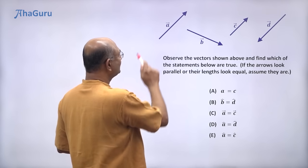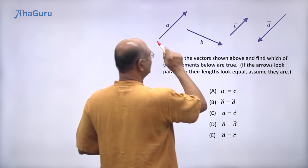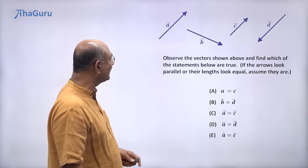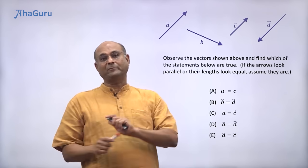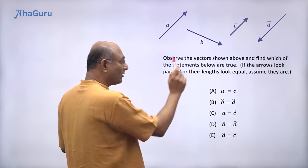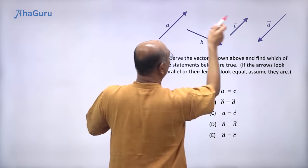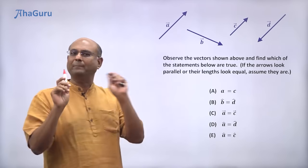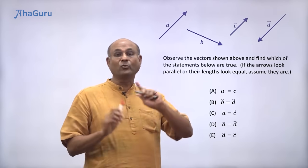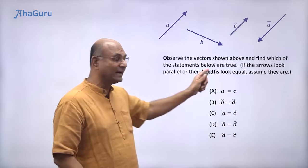Let us now look at this question. In this question, we have been given four vectors: A vector, B vector, C vector, and D vector. And we want to find out which of these statements is true. We have also been told that if the arrows look parallel, we assume that they are parallel. Similarly, if the lengths look equal, we are told to assume that they are equal.